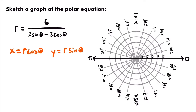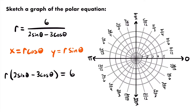If we multiply both sides of the equation by the quantity 2 sine theta minus 3 cosine theta, we get r times the quantity 2 sine theta minus 3 cosine theta equals 6 — the denominator cancels on the right, leaving 6. Distributing r through the quantity gives us 2r sine theta minus 3r cosine theta equals 6.